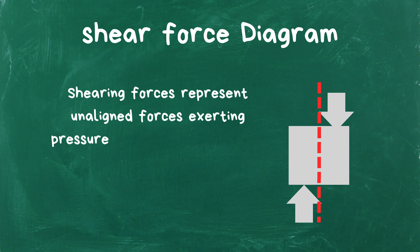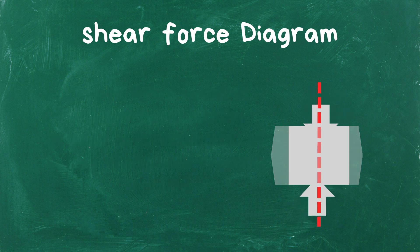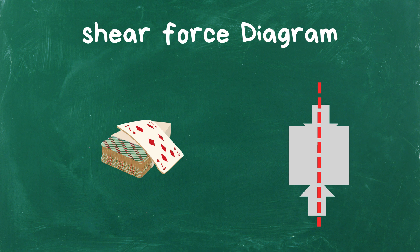Shearing forces represent unaligned forces exerting pressure on different parts of a body, pushing them in opposing directions. Conversely, when forces align, they create compression forces. Think of a deck of cards being pushed from opposite ends, causing them to slide.